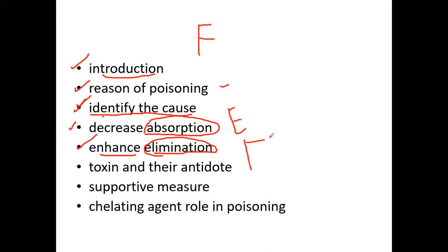The next approach is to enhance the elimination of the poison from the body, because if we eliminate the poison it will not be absorbed and will not cause disturbances to normal physiology. For elimination we use approaches like changing the pH of the urine, dialysis techniques such as hemodialysis or peritoneal dialysis, cathartics and purgative agents, and ultimately the most important substance — the antidote.